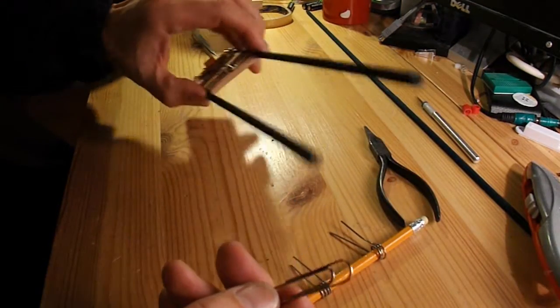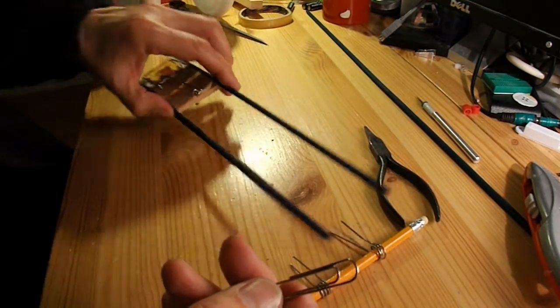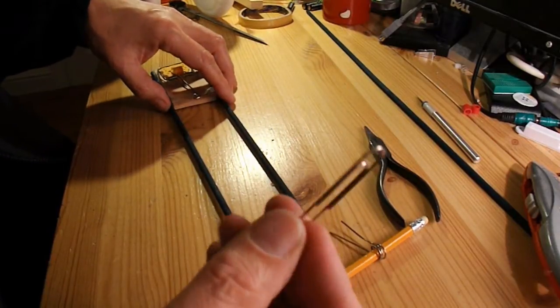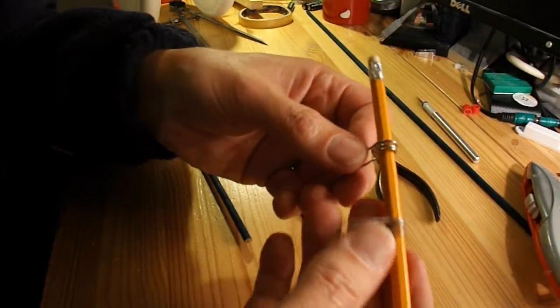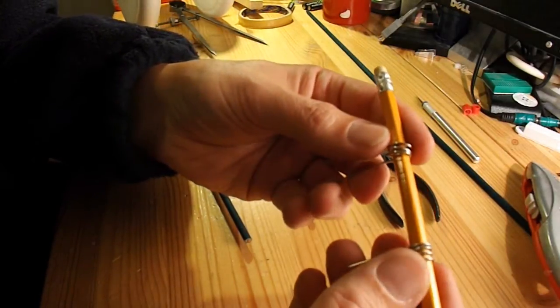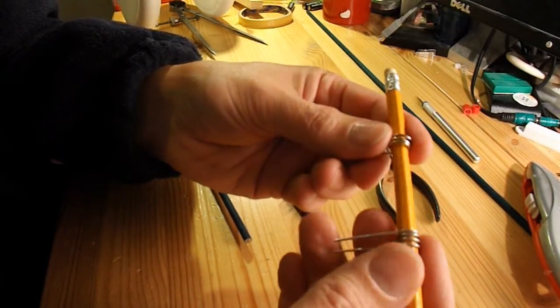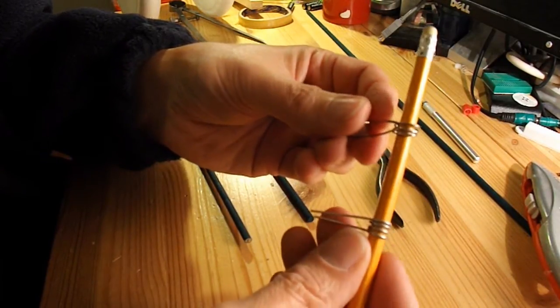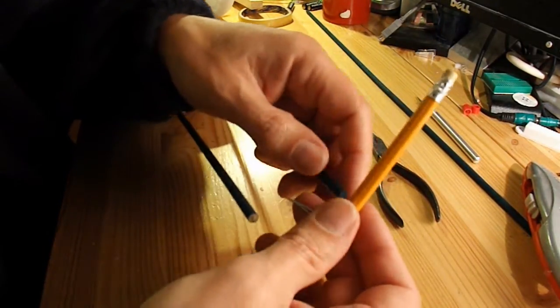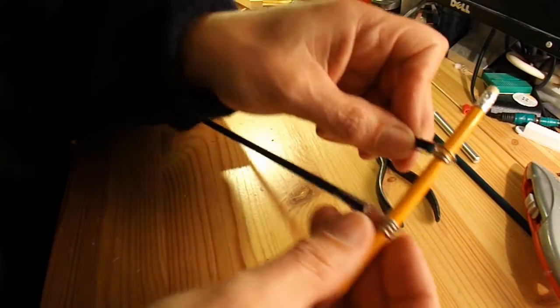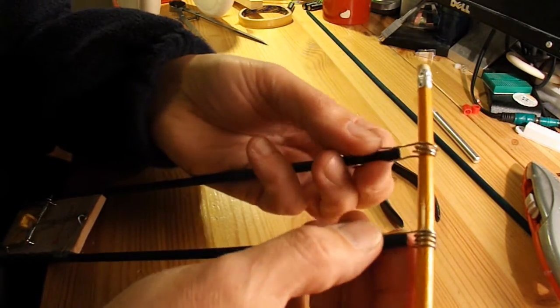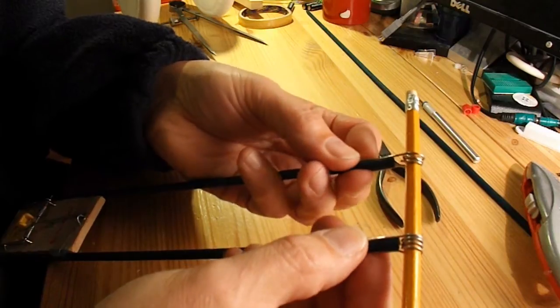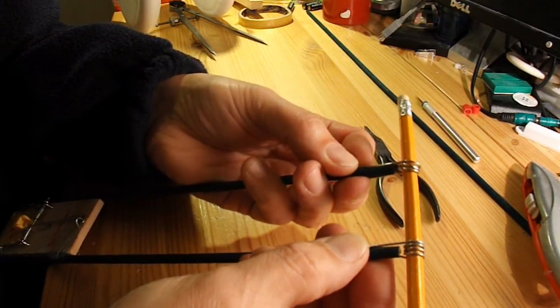Right, to attach the axle to the back of the chassis, I've taken a couple of paper clips and wrapped them around a pencil. The pencil's actually thicker than the axle, so when I take the pencil out, the axle will slide in there easily. And all I'm going to do is hot glue them and either wire or tape them to give them a bit of extra strength.